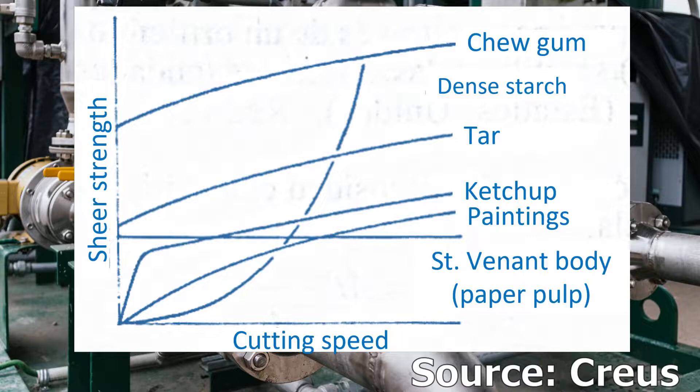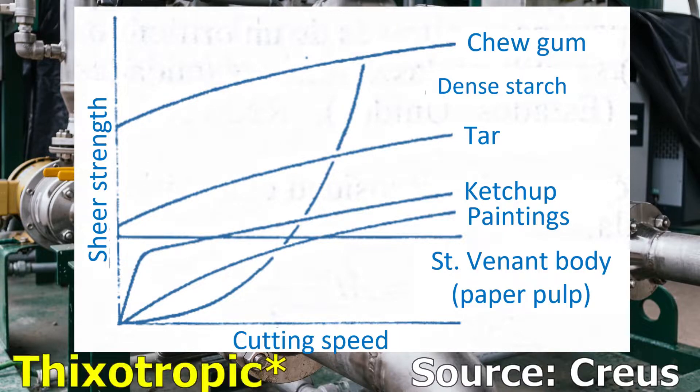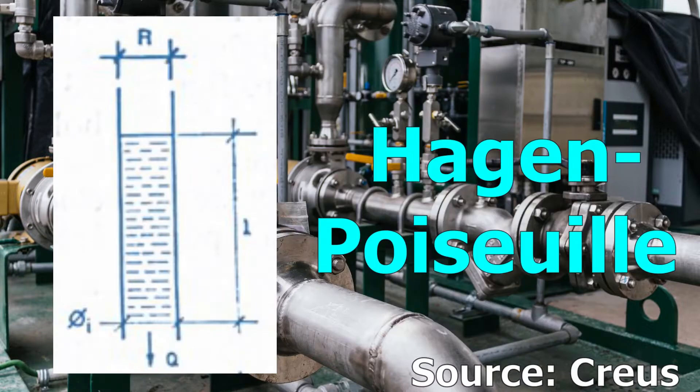Then, graphically, the slope goes down. Other materials that are coagulated at rest pass to the liquid state when stirred, and those are called thixotropic. The Bingham body represents substances that have virtually no slope, such as pulp.